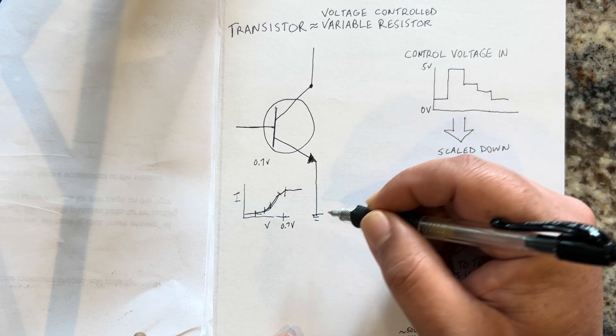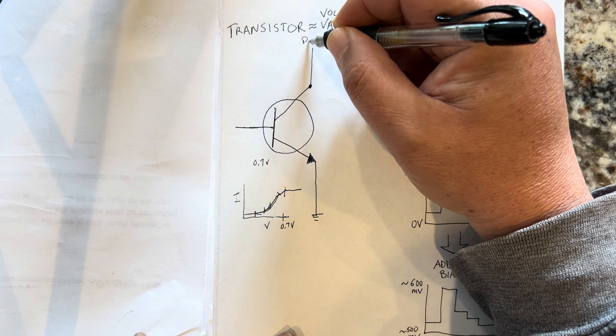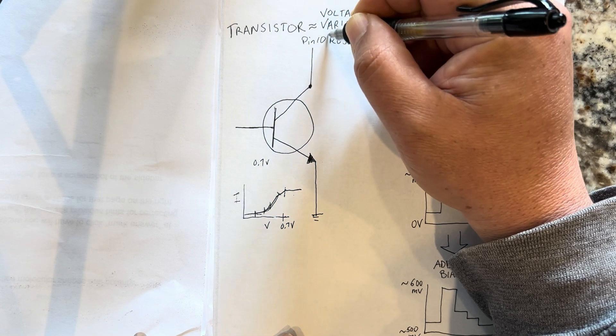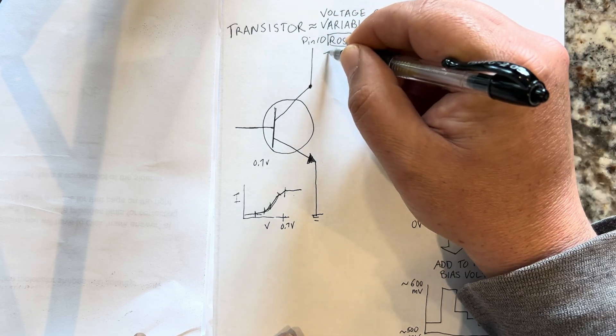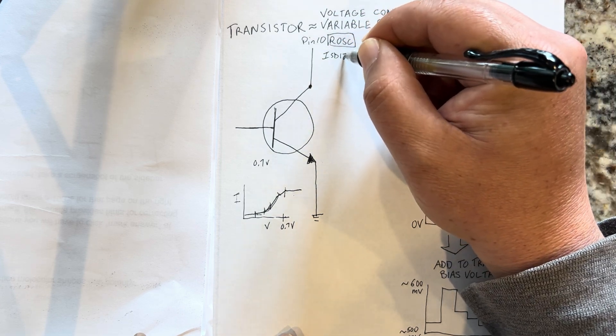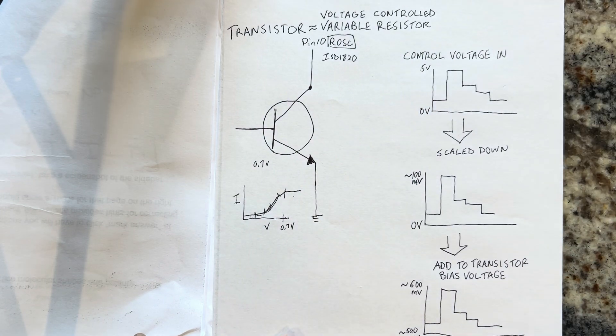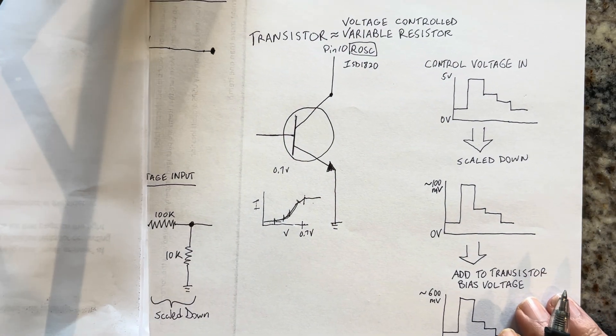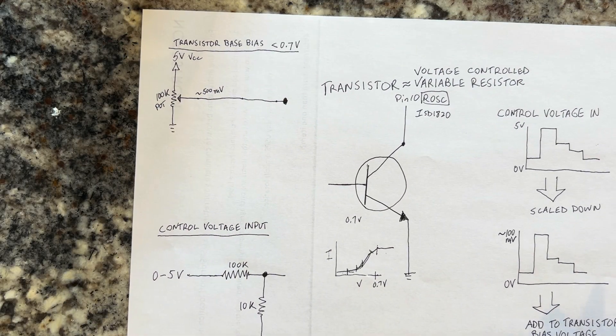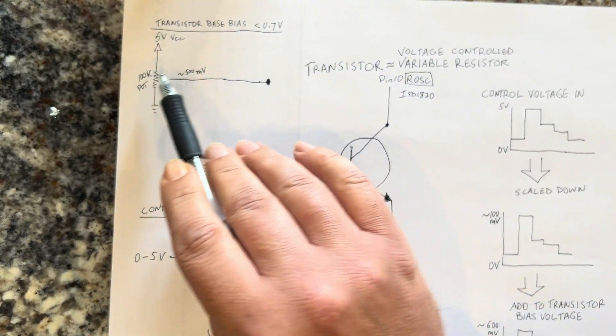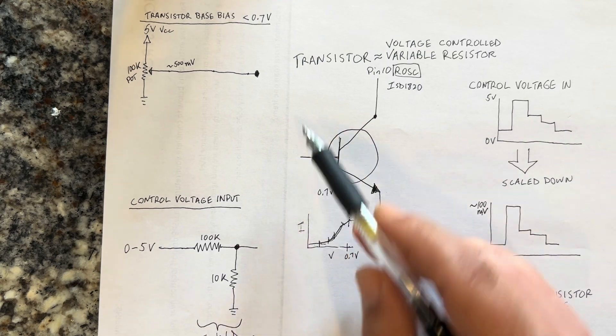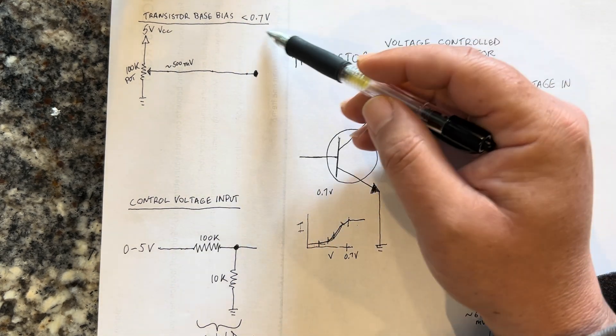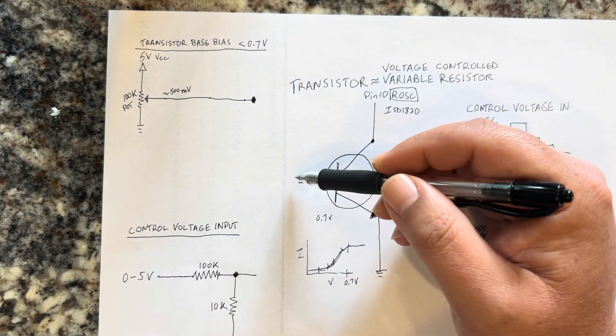We apply this to pin 10, the ROSC pin - the resistance controlled oscillator of the ISD1820 chip. The way to do that is relatively straightforward. You basically need to start with base bias voltage.